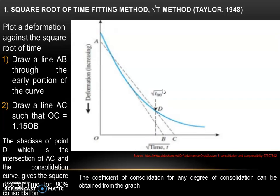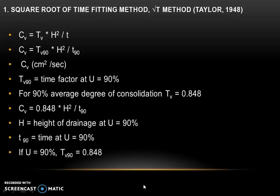The coefficient of consolidation for any degree of consolidation can be obtained from the graph. CV is calculated using the formula: CV = TV × H² / T. TV is the time factor for the degree of consolidation equal to 90 percent, so: CV = TV90 × H² / T90, where CV is in units of cm²/s. For 90 percent average degree of consolidation, the time factor TV equals 0.848. Therefore, CV = 0.848 × H² / T90, where H is the height of drainage at U equal to 90 percent and T90 is the time at U equal to 90 percent.